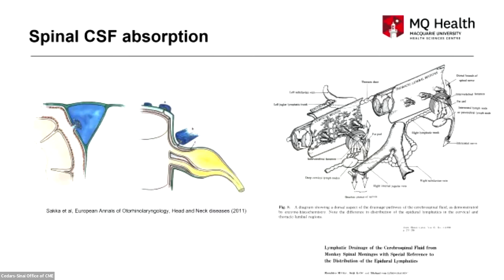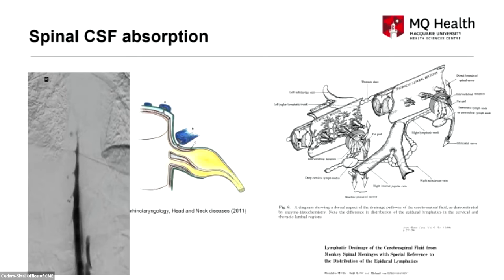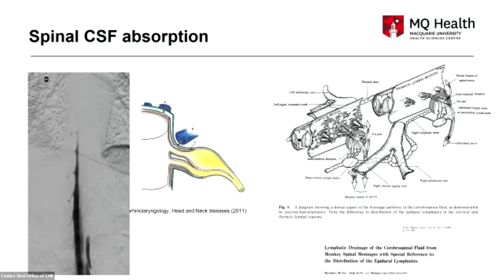We know that CSF is absorbed in arachnoid villi — both in the intracranial venous sinuses and in similar structures in the spinal nerve roots — and there's also evidence of lymphatic connection with the CSF. It's probably not surprising then that we see CSF-to-venous fistulae through that mechanism: there is an already-established connection, and possibly in patients with intracranial hypertension or connective tissue disorders those arachnoid villi open up, forming direct connections.